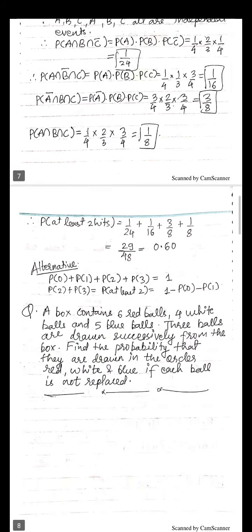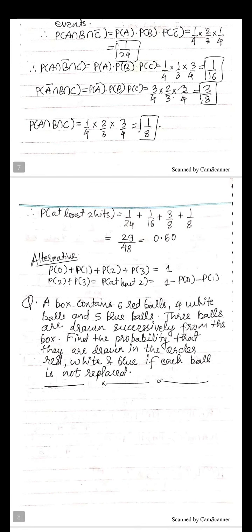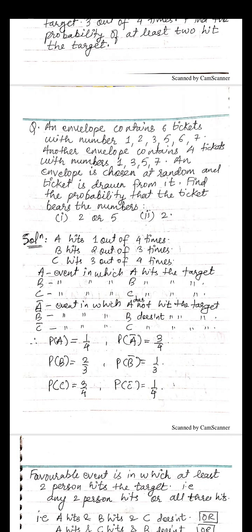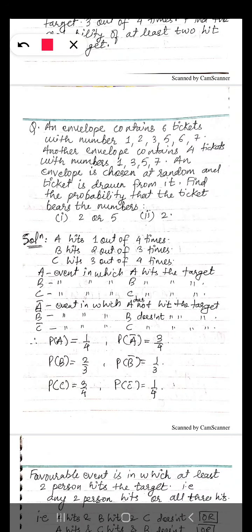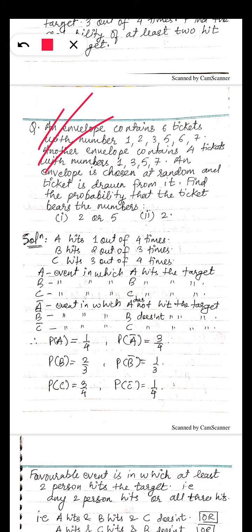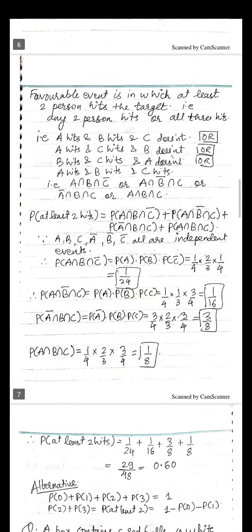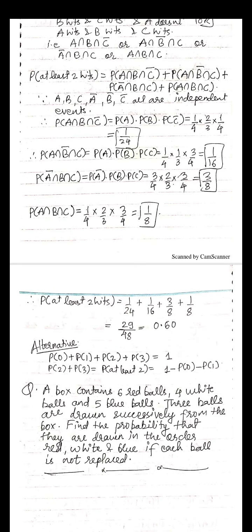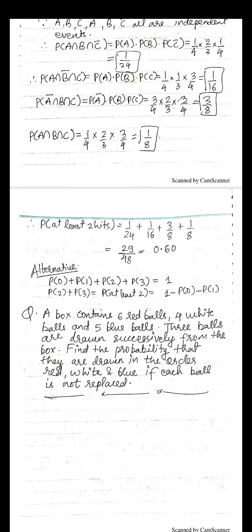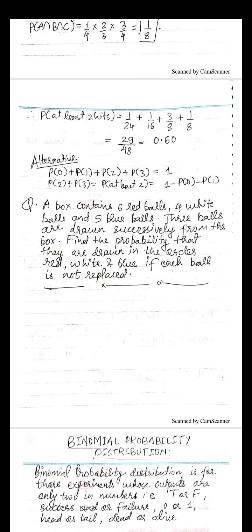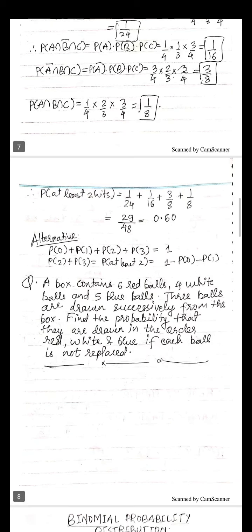For practice: there is an envelope problem to solve. Another practice question involves a box containing six red, four white, and five blue balls. Three balls are drawn successively from the box. Find the probability that they are drawn in the order red, white, and blue if each ball is not replaced. Since balls are not replaced, the events are not independent. Next, we will move on to binomial distribution in the next video.